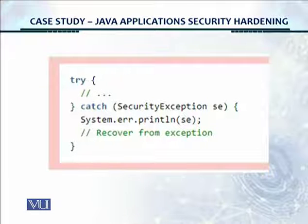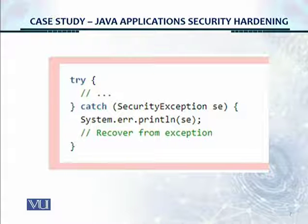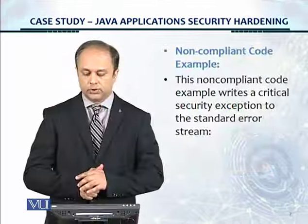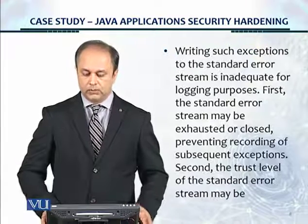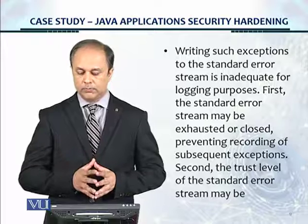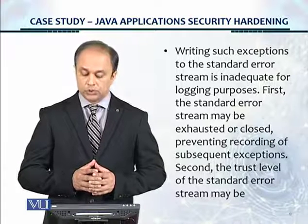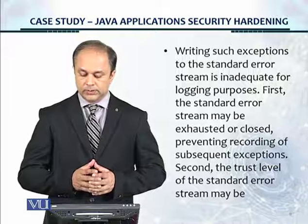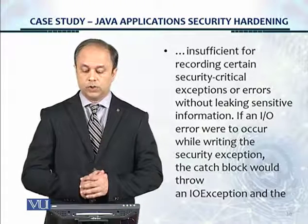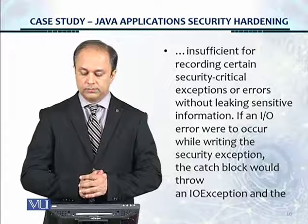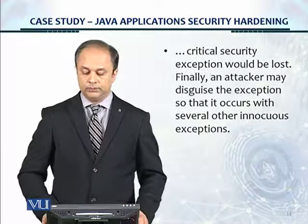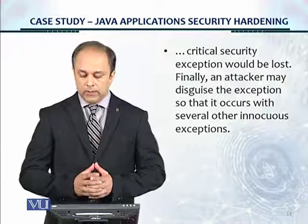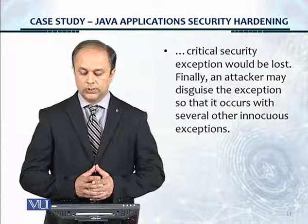This is an example of the non-compliant code shown in the red border — the format used on the SEI website whenever there's non-compliant code. This non-compliant code example writes a critical security exception to the standard error stream. Writing such exceptions to the standard error stream is inadequate for logging purposes. First, the standard error stream may be exhausted or closed, preventing recording of subsequent exceptions. Second, the trust level of the standard error stream may be insufficient for recording certain security-critical exceptions without leaking sensitive information. If an IO error were to occur while writing the security exception, the catch block would throw an IO exception and the critical security exception would be lost. Finally, an attacker may disguise the exception so that it occurs with several other innocuous exceptions.